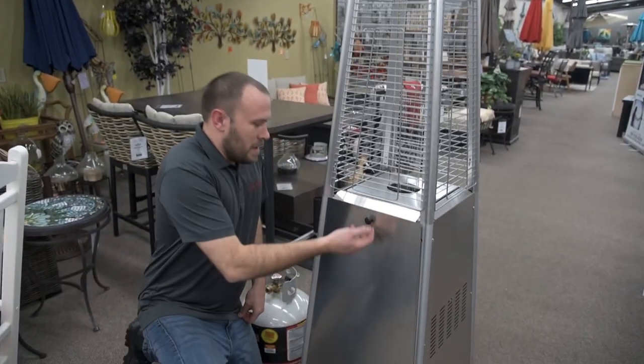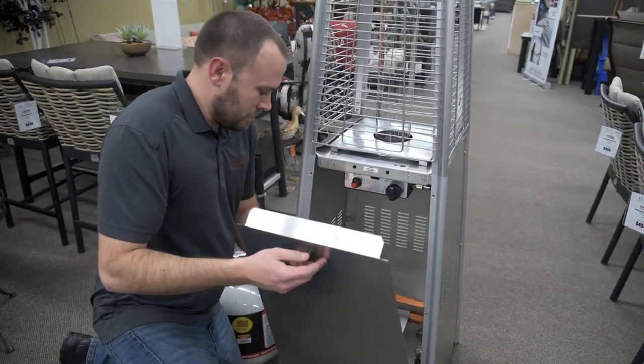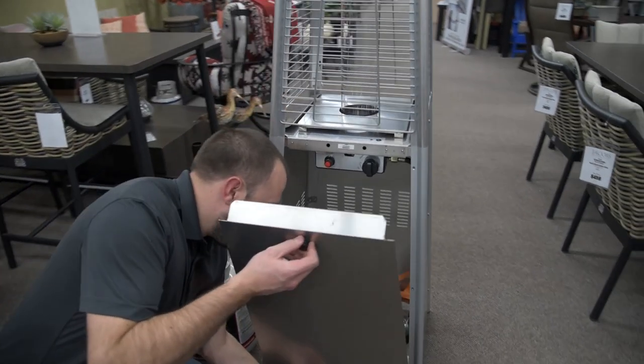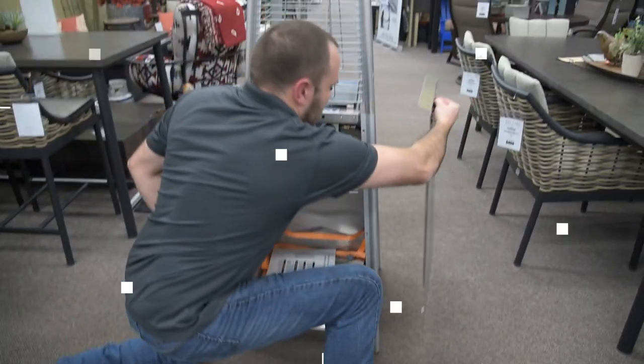So first off, you're going to open the door here, you're going to release the chain, and you're going to pull up just slightly at the bottom to get these cleats to come off. I'm going to set that right here to the side.